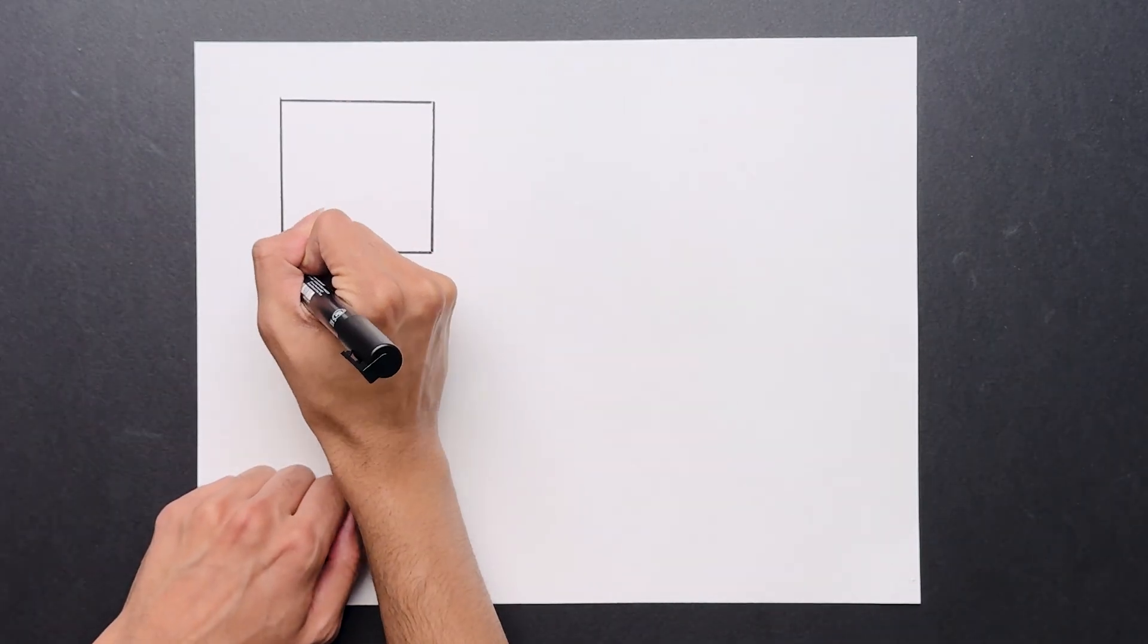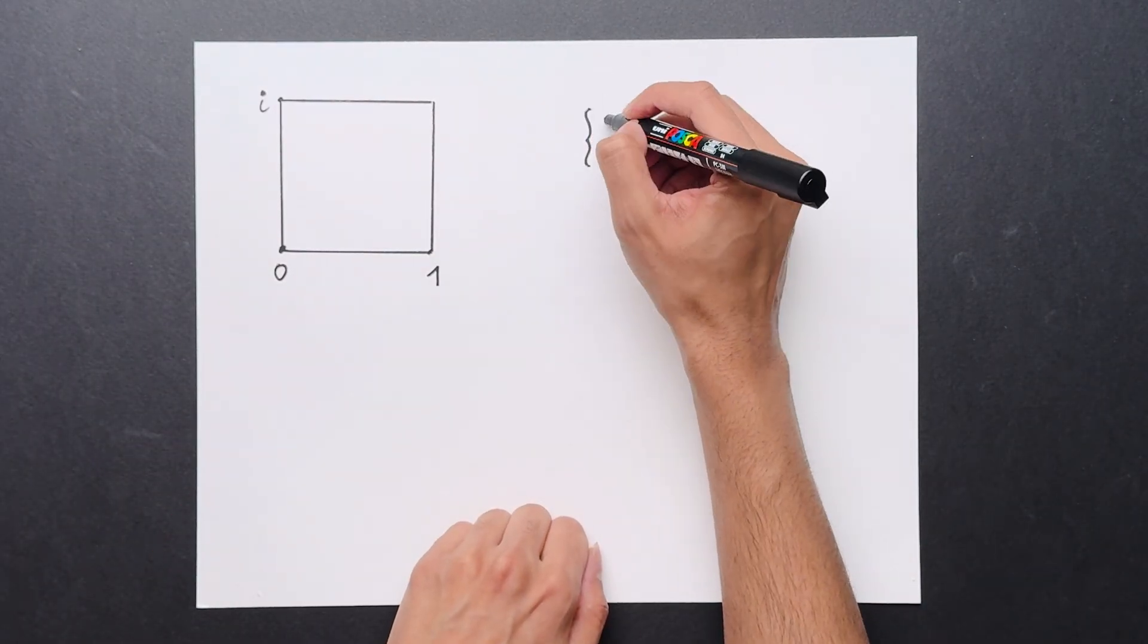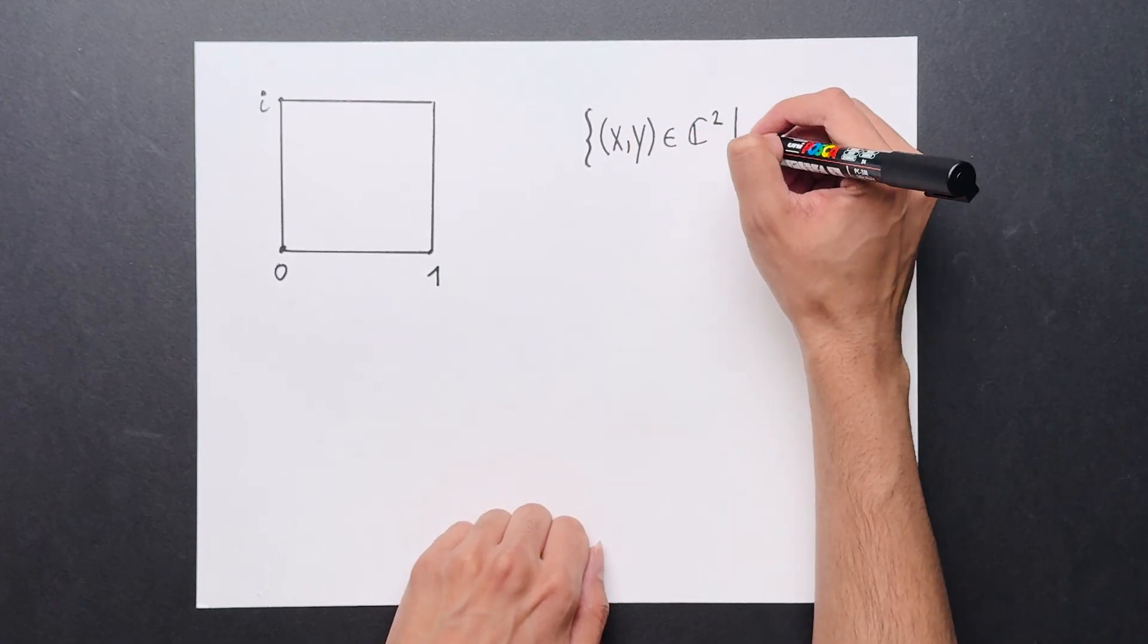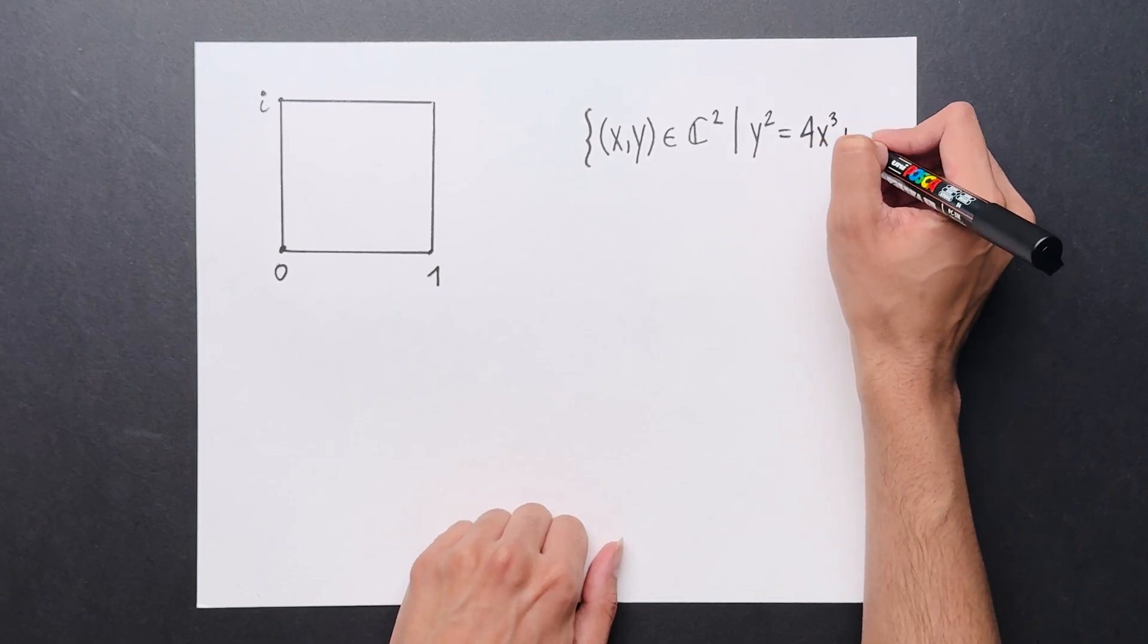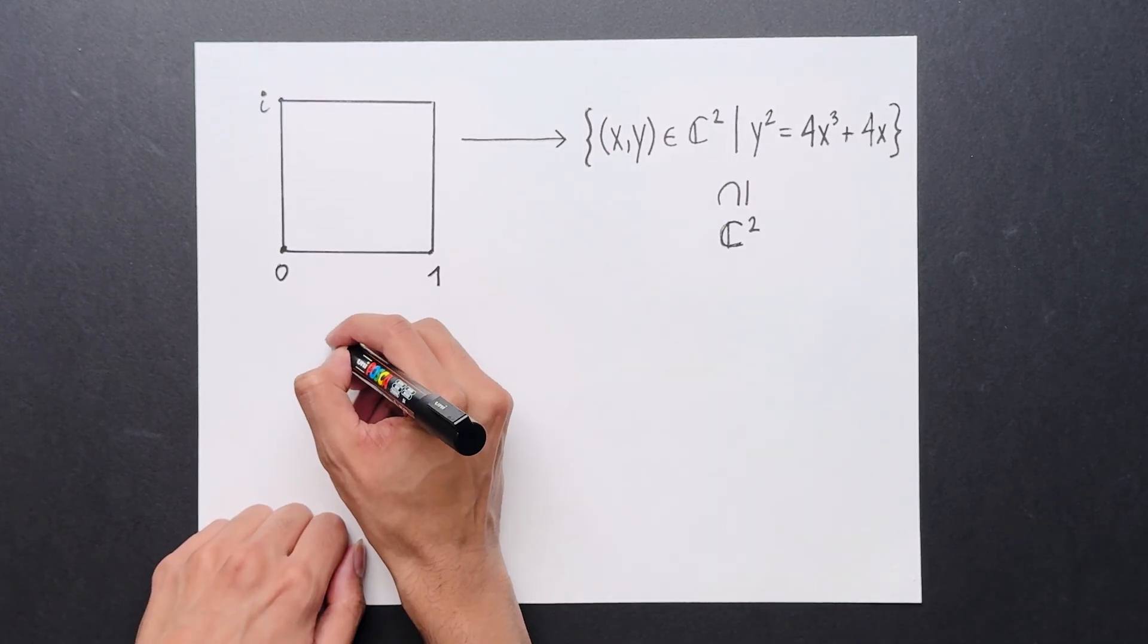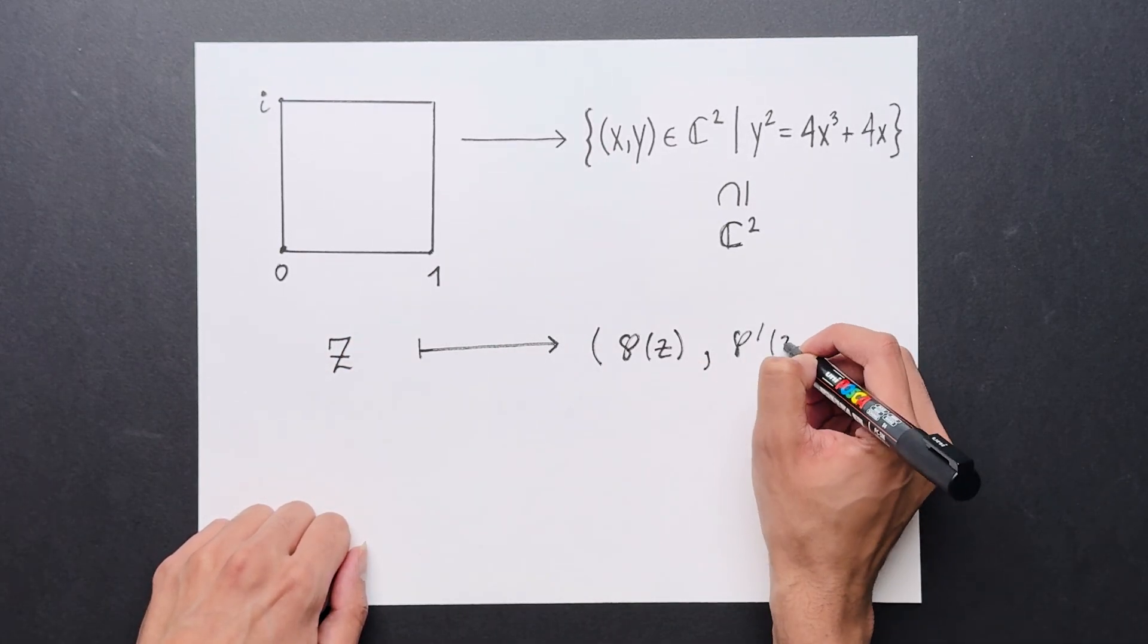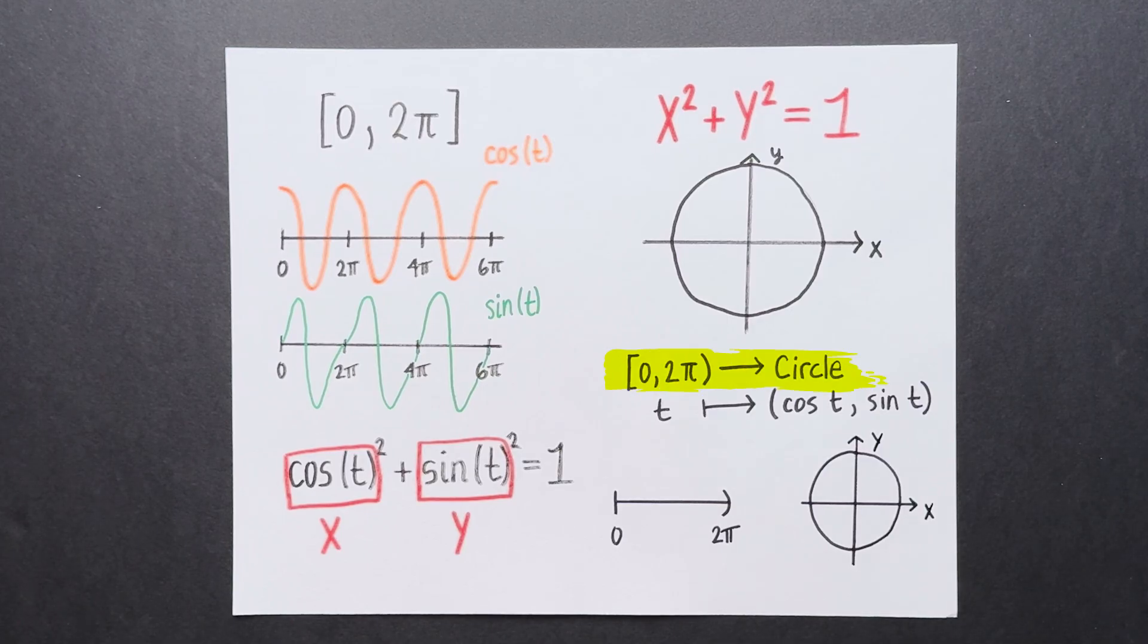So just like before, on one hand we have this square in a complex plane, which you can think of as the complex torus. On the other hand, we have this algebraic set. The set of all complex numbers, x, y, such that y squared equals 4x cubed plus 4x. This is a subset of C squared. And there's a map from here to here. Given a complex number z, we map it to the pair p of z comma p prime of z. This is entirely analogous to how we mapped the unit interval to the circle by using sine and cosine.